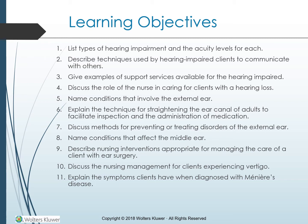Learning objectives: List types of hearing impairment and acuity levels for each. Describe techniques used by hearing impaired clients to communicate with others. Give examples of support services available for the hearing impaired. Discuss the role of the nurse in caring for clients with a hearing loss. Name conditions that involve the external ear, and explain the technique for straightening the ear canal of adults to facilitate inspection and the administration of medication.